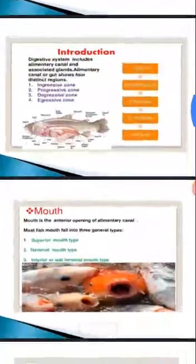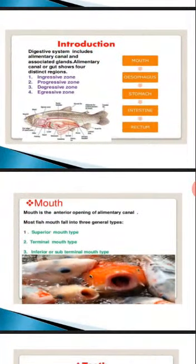The mouth is the anterior opening of the alimentary canal. In most fishes the mouth can be categorized into three general types: the superior mouth — where the mouth opens upward; the terminal mouth — where the mouth faces forward; and the inferior mouth — which is on the lower side, as seen in omnivorous fishes.